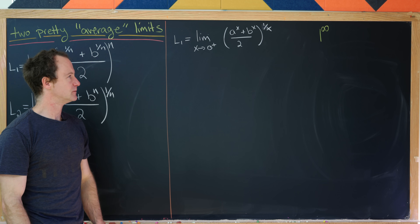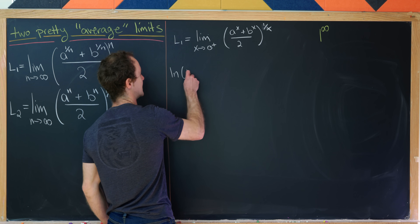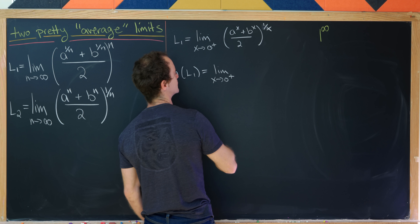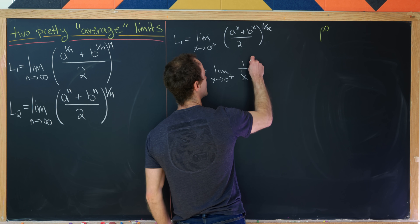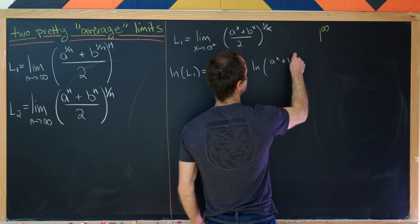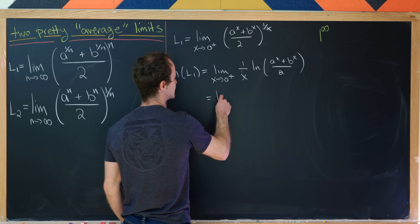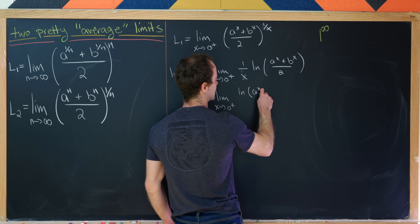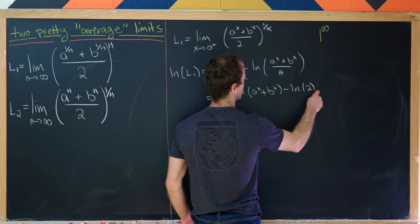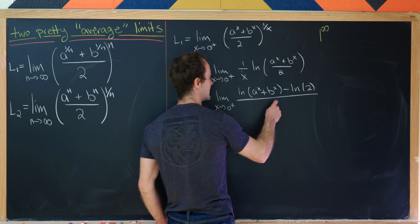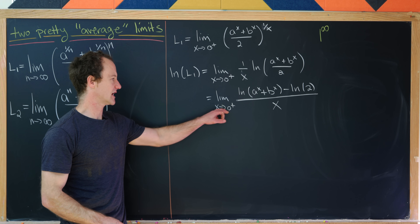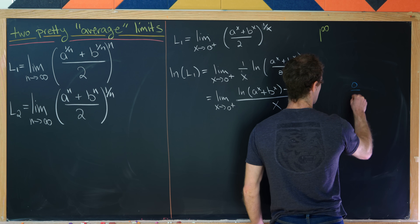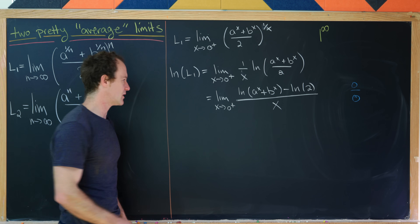The standard trick is to take the log of both sides, and after taking the log we can apply L'Hôpital's rule. Applying the log gives us (1/x) times the log of (a^x + b^x)/2, which we rewrite as the limit as x goes to 0 from above of [log(a^x + b^x) − log 2] over x. As x approaches 0, the numerator approaches log 2 − log 2 = 0, and the denominator also approaches 0, so we can apply L'Hôpital's rule.